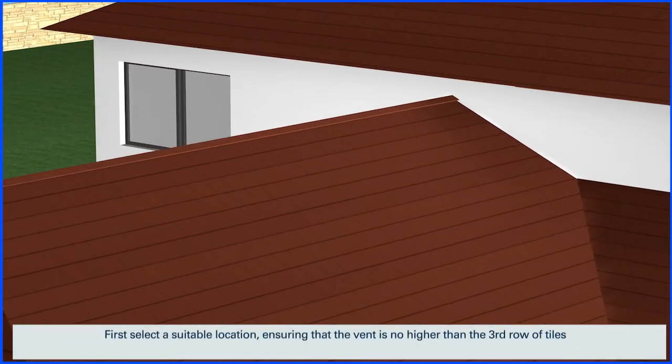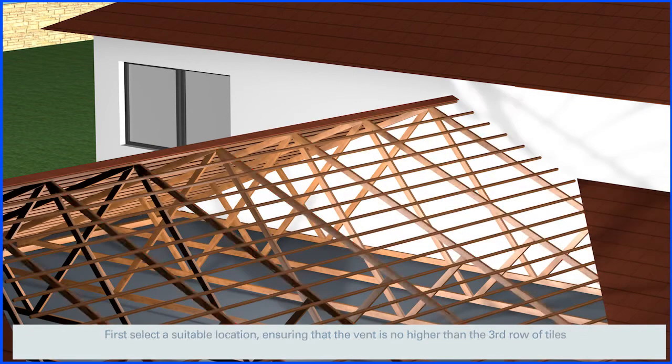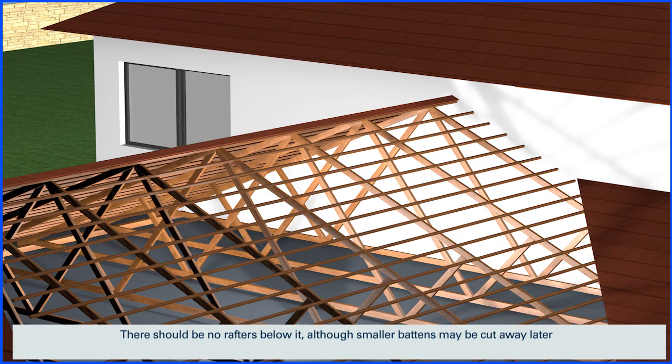First, select a suitable location, ensuring that the vent is no higher than the third row of tiles. There should be no rafters below it, although smaller battens may be cut away later.